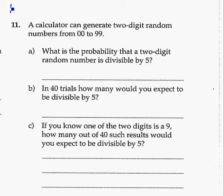So we are on page 213, question 11, looking at expected values. This question we have to just read carefully for its wording. A calculator can generate two-digit random numbers from 0 to 99. So those are numbers like 12, 29, etc. Two digits, and anything from 0 to 99.